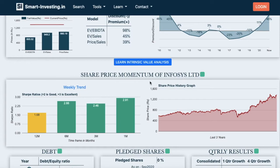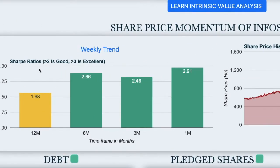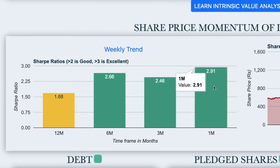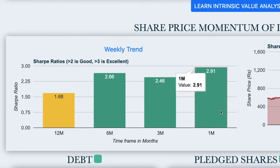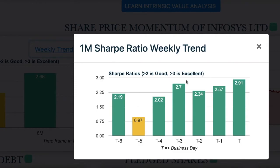The next section shows the price momentum of the stock over a duration of one month to 12 months. We have taken the Sharpe ratio to calculate the same. A ratio above two would signify a good uptrend in the stock price for that duration. The one-month ratio is considered in the top-level six color-coded squares to capture the latest price momentum, and we can also see the weekly trend on how the one-month momentum is changing.